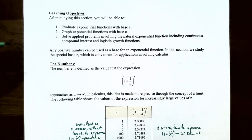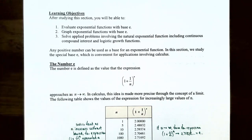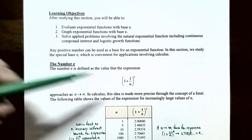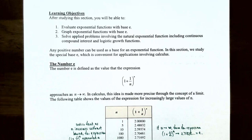From the previous video, any positive number can be used as a base for an exponential function as long as the base is positive and not equal to one. In this section we're going to study a special base called e, which is convenient for applications involving calculus. The number e is defined as the value of the expression (1 + 1/n)^n as n increases without bound — an idea made precise through the concept of a limit.